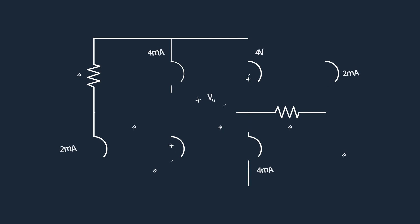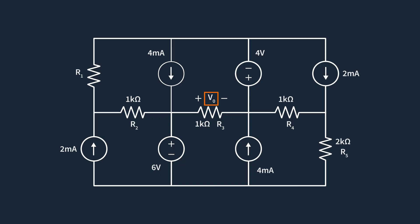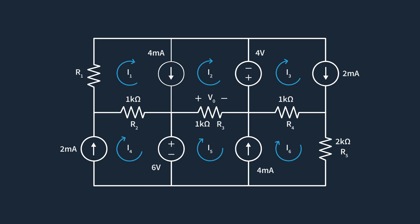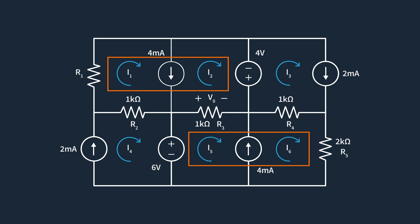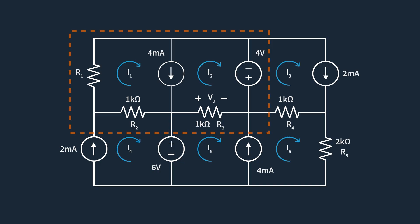Let's take a look at an example of applying KVL to a mesh analysis circuit with a supermesh. Here, we are trying to use mesh analysis to calculate V0. We start by labeling the meshes and assuming the direction of current flow within them. You would notice two problems: I1 and I2 share a current source, and I5 and I6 also share a current source. Since the current source tells us the current through it but not the voltage across it, we can't create an equation that describes I1, I2, I5, or I6. We'll need to create a supermesh around I1 and I2, as well as a supermesh around I5 and I6.